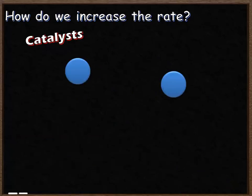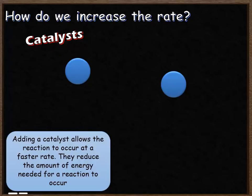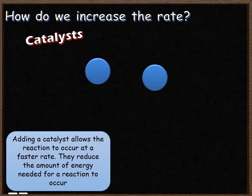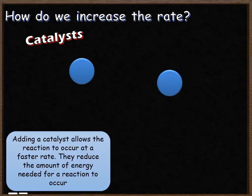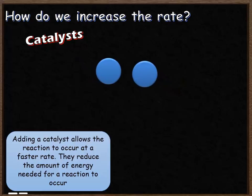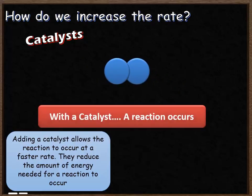The final factor that can affect the rate of a reaction is a catalyst. The catalyst allows reactions to occur faster because it reduces the amount of energy needed. Without a catalyst, a collision that occurs without sufficient activation energy results in no reaction. However, when we add a catalyst, particles that collide without ordinarily enough energy can still react — the catalyst reduces the activation energy, giving more successful collisions and a faster rate of reaction.